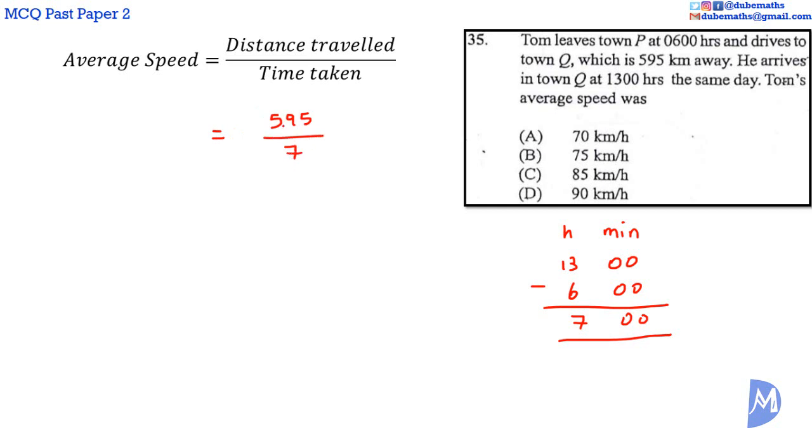So the average speed is equal to 595 kilometers divided by 7 hours. 7 into 59 is 8. 8 sevens are 56 with 3 remaining. 7 into 35 is 5, giving us 85 kilometers per hour. The answer is C.